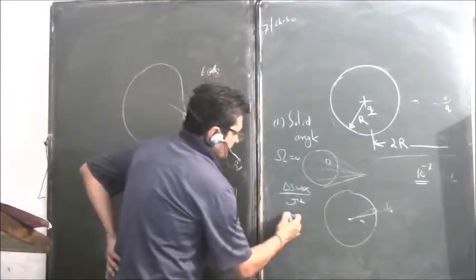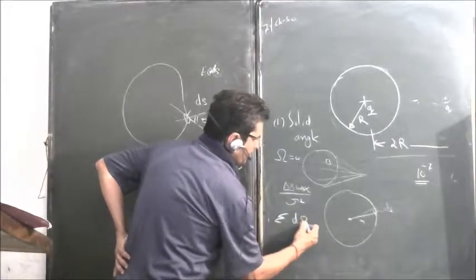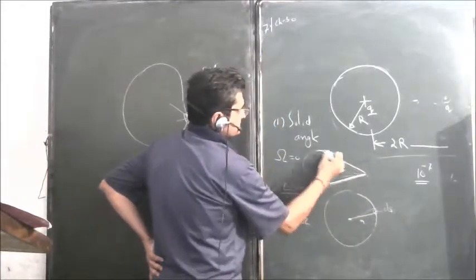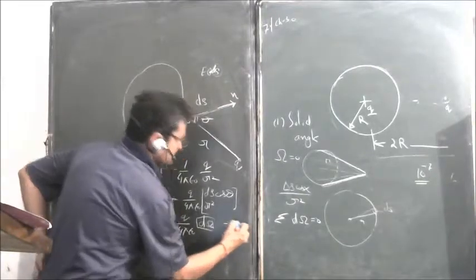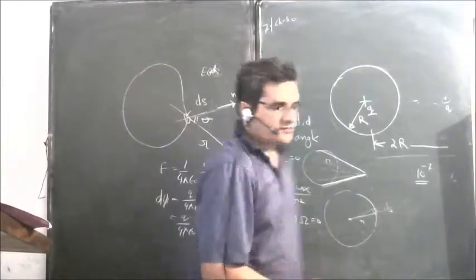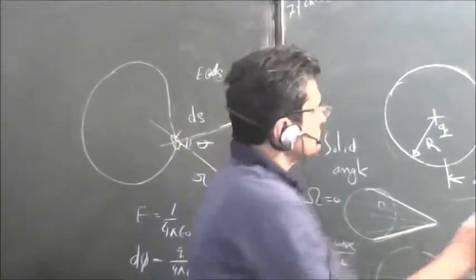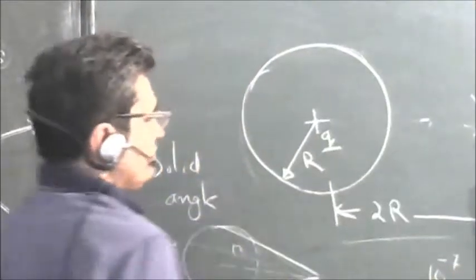And the sum of all these solid angles formed by a point outside the surface is zero. So this flux is zero. So this point is not going to have any flux.